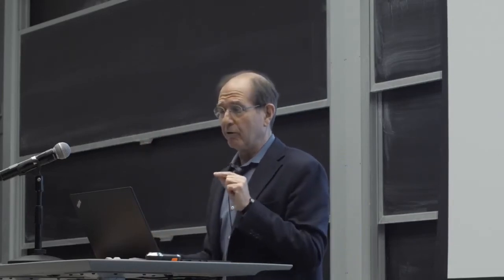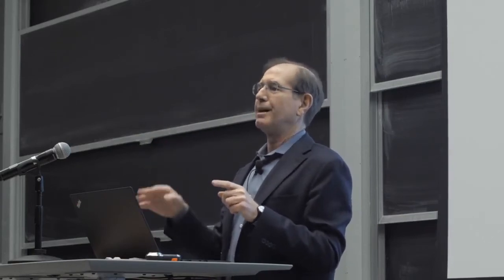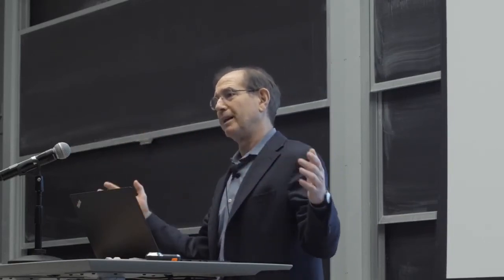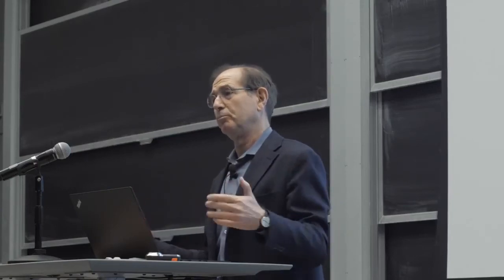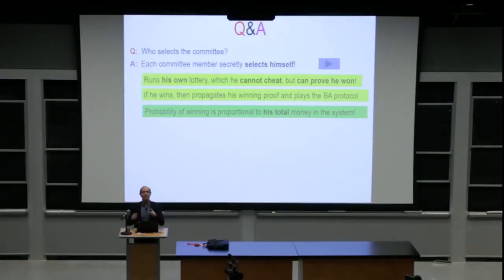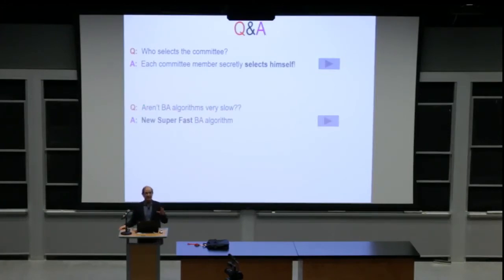Your probability of winning the lottery is proportional to the total amount of money you have relative to the total money in the system. This is necessary to prevent Sybil attacks: if you have a million algos in one public key, or a million keys with one algo each, your probability of being selected to the committee is absolutely the same. Algorand ensures this. The committee can be generated instantaneously.